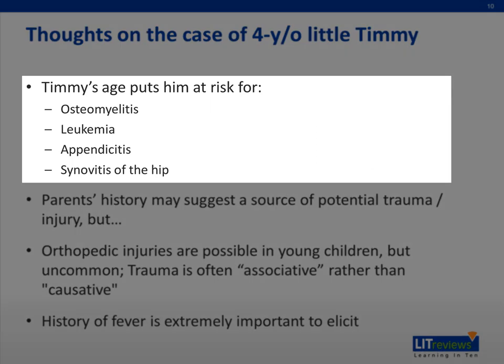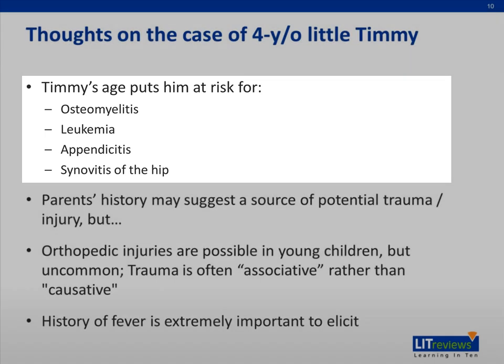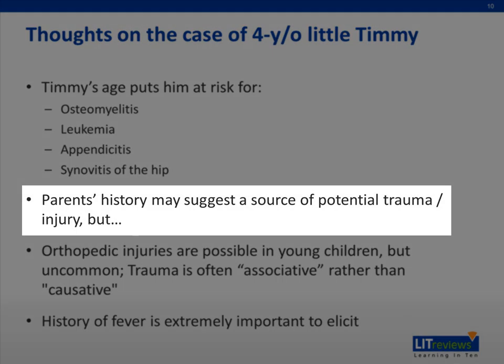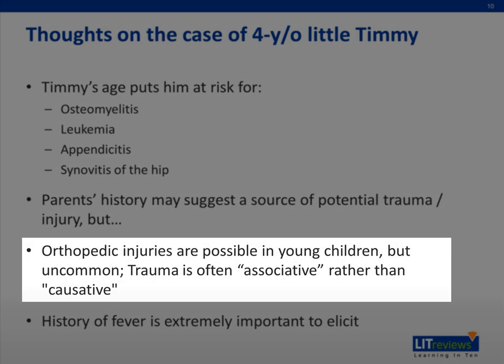Timmy's age puts him at particular risk for osteomyelitis, leukemia, appendicitis, as well as synovitis of the hip. His mother's history did suggest a possible source of trauma — jumping off of his jungle gym — but if you think about Timmy and any other child, they commonly jump off jungle gyms and don't commonly get injured as adults or older children might. Though a parent might recollect a trauma, often they're looking for an explanation for the limp, and so the trauma can be associative as opposed to causative. Therefore, even if a parent tells you about a possible source of trauma, if it doesn't sound severe enough to have caused a serious injury, it's important to look for other causes as well. It's also important to obtain a history of fever, as this will help you in developing your differential.